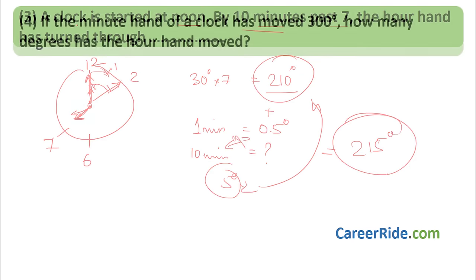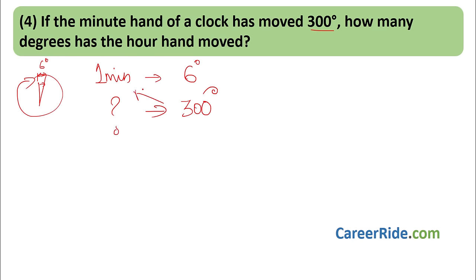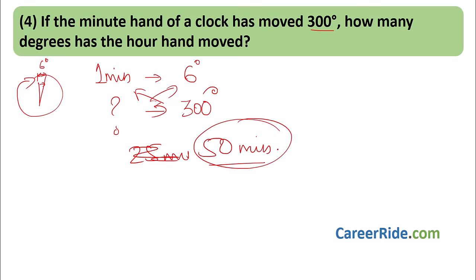Question 4: If the minute hand has moved 300 degrees, how many degrees has the hour hand moved? Since 1 minute = 6 degrees, 300 ÷ 6 = 50 minutes have passed. In 1 minute the hour hand moves 0.5 degrees, so in 50 minutes it moves 50 × 0.5 = 25 degrees.